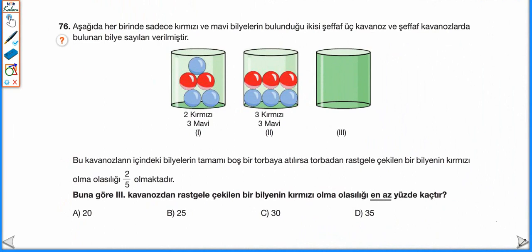76. sorumuza devam edelim. İkisi şeffaf 3 kavanoz ve şeffaf kavanozlarda bulunan bilye sayıları verilmiştir. Bu kavanozların içindeki bilyelerin tamamı boş bir torbaya atılırsa, torbadan rastgele çekilen bir bilyenin kırmızı olma olasılığı 2 ÷ 5 olmaktadır. Buna göre 3. kavanozdan rastgele çekilen bir bilyenin kırmızı olma olasılığı en az kaçtır? 1. kavanozda 5 bilye, 2. kavanozda 6 bilye var. 3. kavanozdaki bilye sayısını bilmiyoruz.